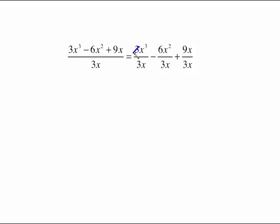Creating these separate fractions allows you to just use your exponent laws and do basic canceling. 3 cancels with 3. x cubed over x, use your exponent law, keep the base, subtract the exponents and get x squared. Over here, 6 divided by 3 is 2.